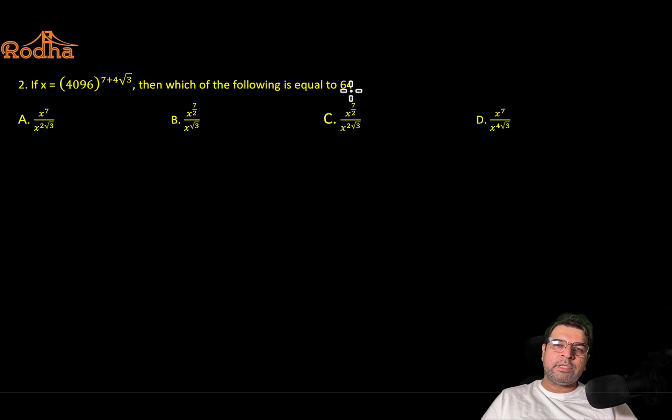Second question: 2 if x equals 4096 to the power 7 plus 4 root 3, then which of the following is equal to 64? We generally try to put the values in the options and then check which of these will satisfy. Which will give you 64? That can be time consuming obviously. You put values here, here, here. I do not know which one will satisfy.